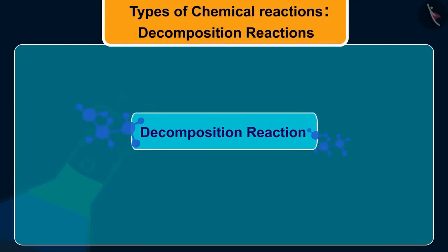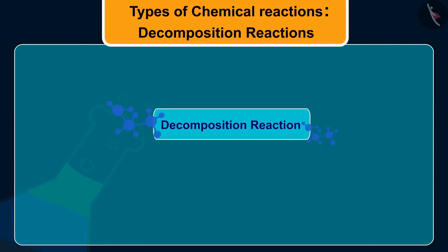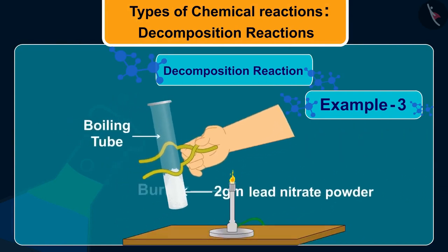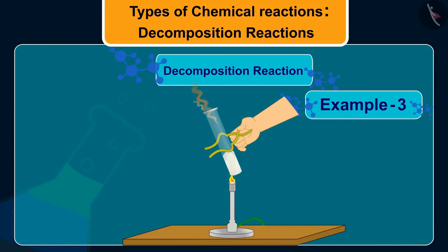Let us take one more example of decomposition reaction. Take about 2 grams lead nitrate powder in a boiling tube. Hold the boiling tube with a pair of tongs and heat it over a flame.